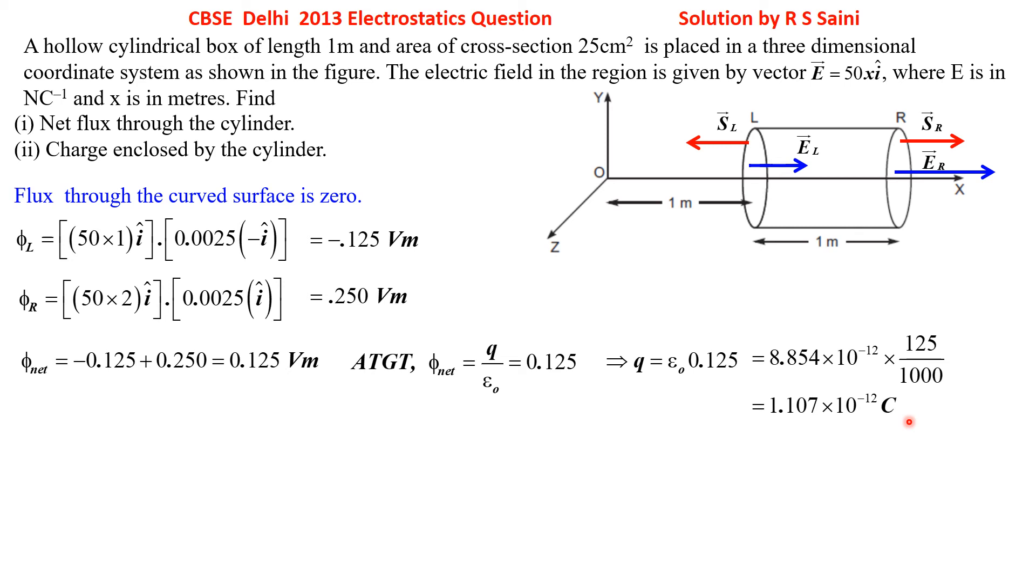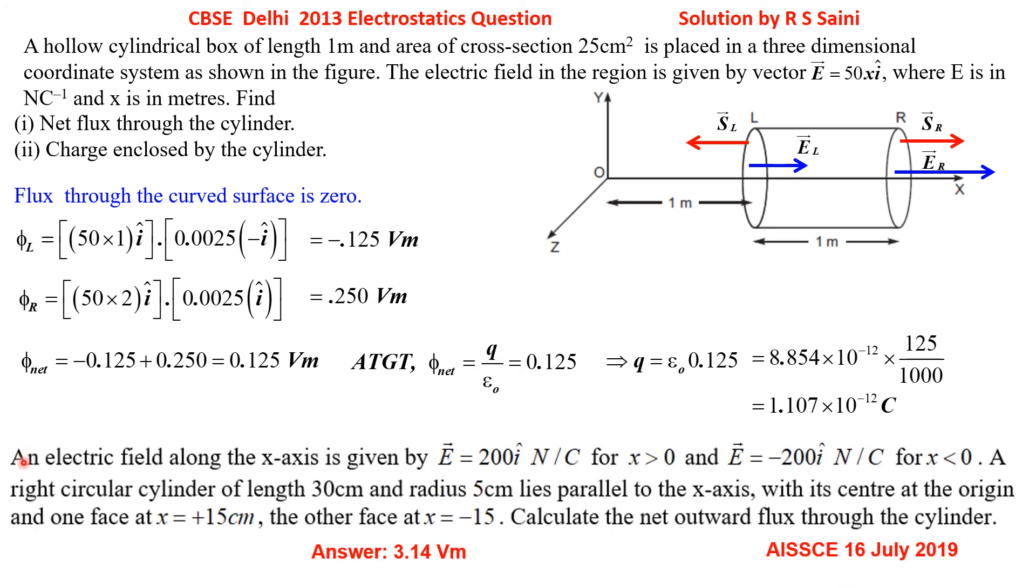Now there is an exercise based on similar type of question which we have got in year 2019, that is supplementary exam 16 July 2019. Just go through it. Here again you have electric field along x-axis, but it is 200 newton per coulomb along i-cap for values of x greater than 0, right hand side. And E is minus 200 i-cap newton per coulomb for values of x less than 0, that is left hand side.